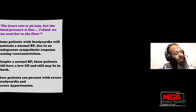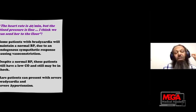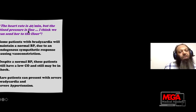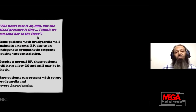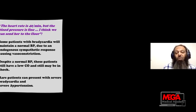We frequently hear from fellows or residents assessing a patient: 'The heart rate is 40, but the pressure is fine — I think we can send this patient to the floor.' This statement should be dissected before discharging, because some patients with bradycardia maintain blood pressure due to endogenous sympathetic vasoconstriction. Despite normal blood pressure, those patients may still have low cardiac output and be in shock. Rarely, patients can present with severe bradycardia and severe hypertension because of a severe vasoconstrictive response.